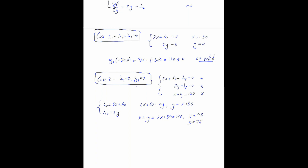Let's check. g2 equals zero is satisfied by assumption. Now let's check g1 at (45, 75). g1 of (45, 75) equals 80 minus 45, which is greater than or equal to zero. So this is not a valid point.